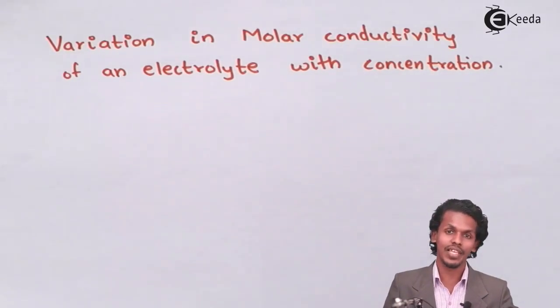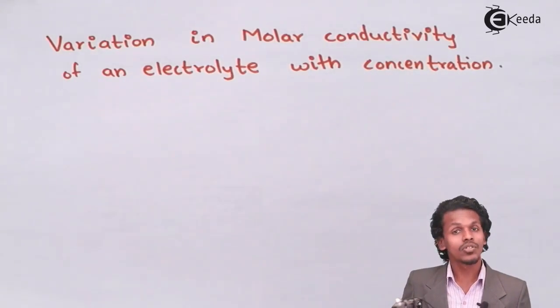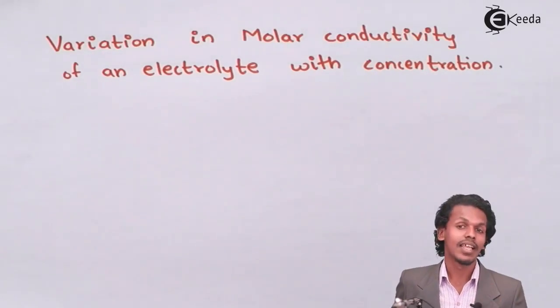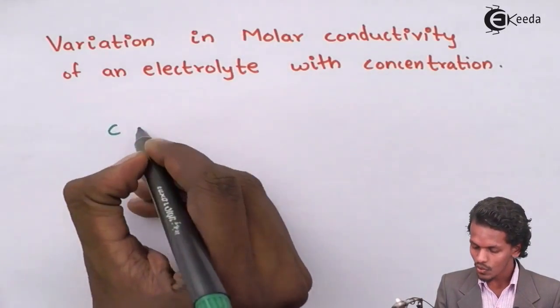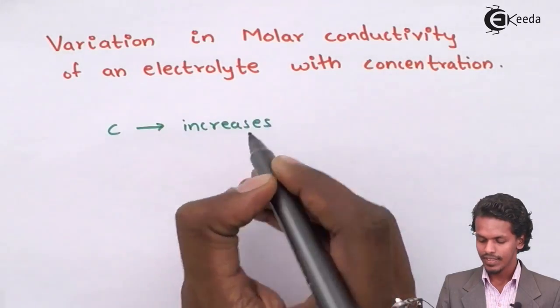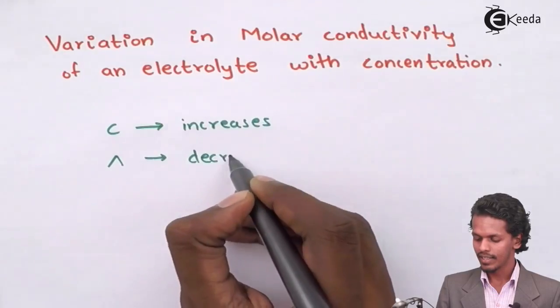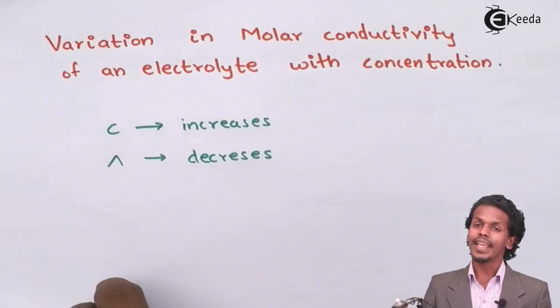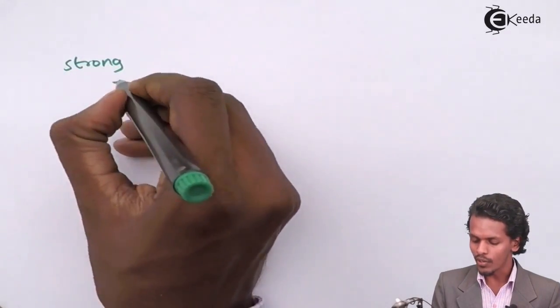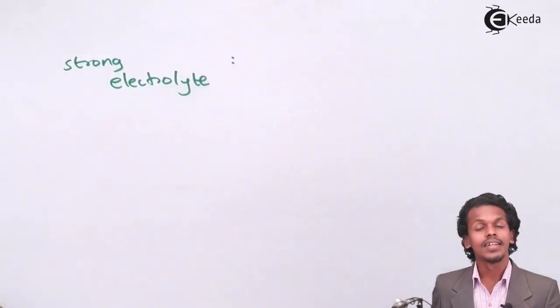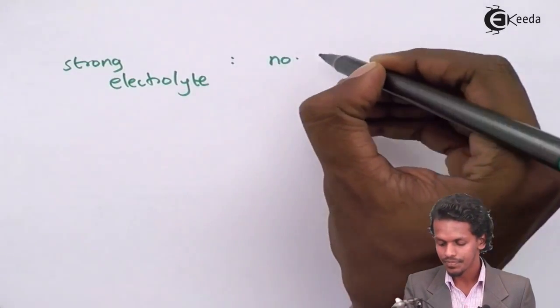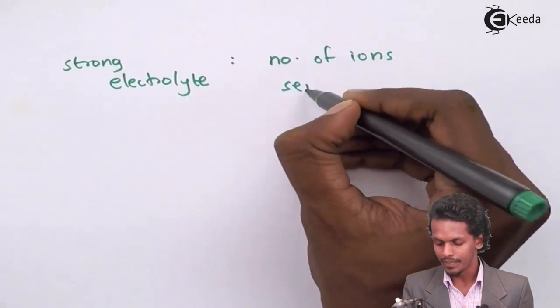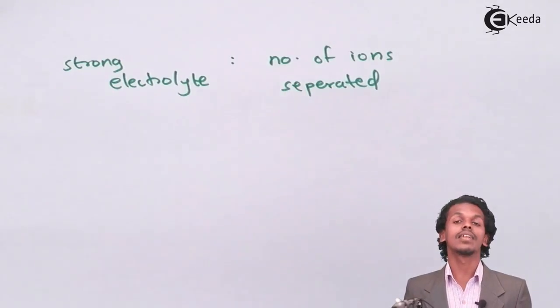Since the cations and anions are being separated from each other, this is more possible in strong electrolytes. Strong electrolytes have the tendency to dissociate completely, which increases molar conductivity. If concentration increases, molar conductivity decreases and vice versa. For strong electrolytes, they dissociate completely and the number of ions are separated much more effectively than for a weak electrolyte.